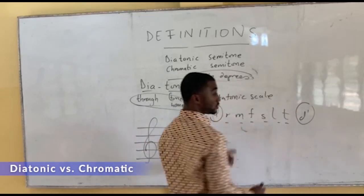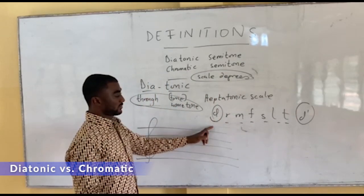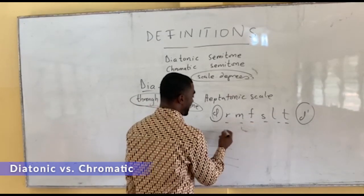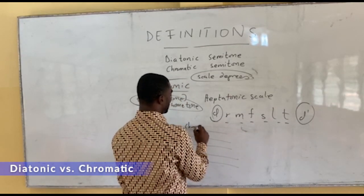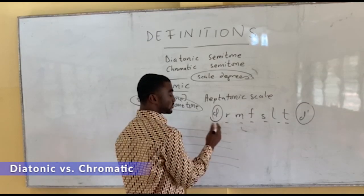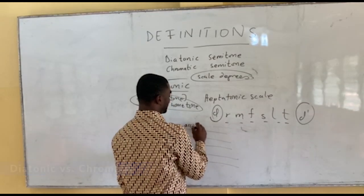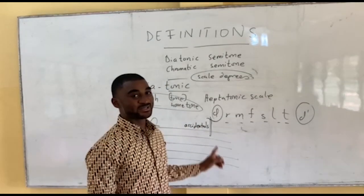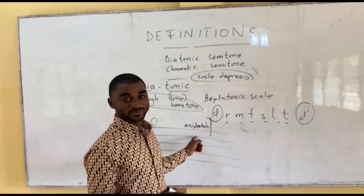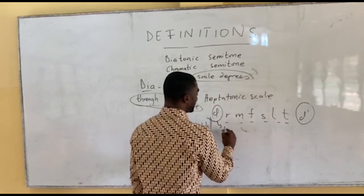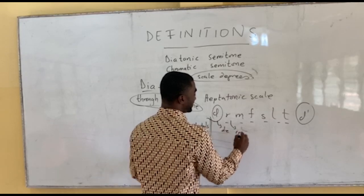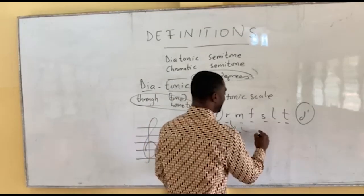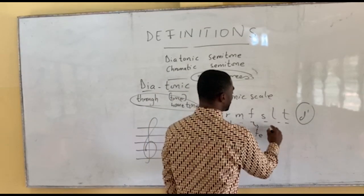These are the seven notes of the scale. Right adjacent to each of these notes — well, not all of them — are what we call accidentals. If you are in this class, you should know what accidentals are. From do, we have di. From re, there's ri. Mi and fa don't have a semitone dividing them. From fa, there's fi. From so, there's si.